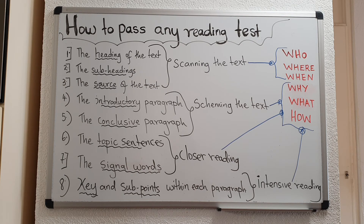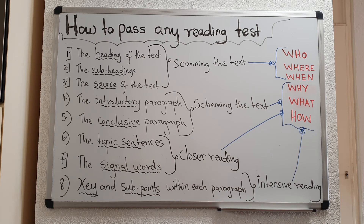Once you highlight the topic sentences, you have a whole picture of exactly what the text is about. In the introductory paragraph you got the gist of what the writer is trying to communicate. In the conclusive paragraph you have a very good idea of what specifically the writer is trying to let you know — what his deductions are, what the findings are. When you highlight the topic sentences, you know exactly what the text is talking about and where to find all the details that you need.